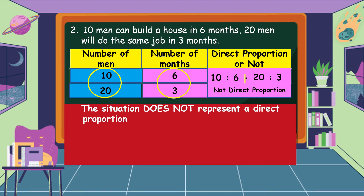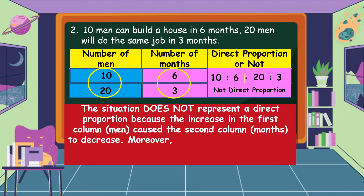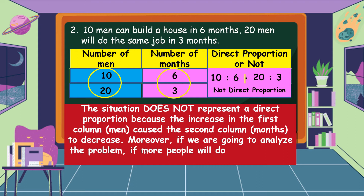The situation does not represent a direct proportion because the increase in the first column — men — caused the second column — months — to decrease. Moreover, if we analyze the problem, if more people will do the same job, there is less time to do it.